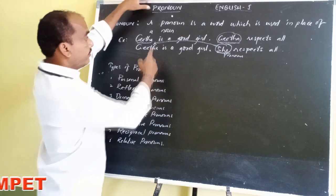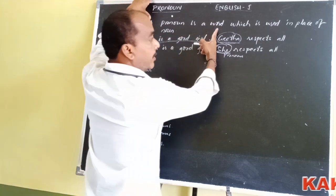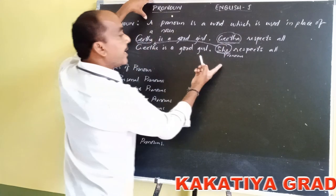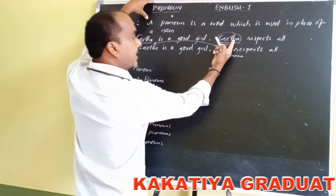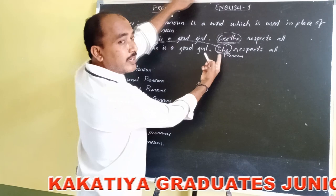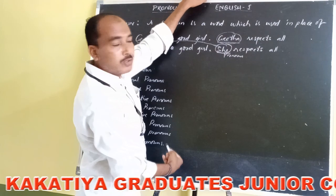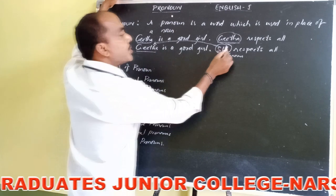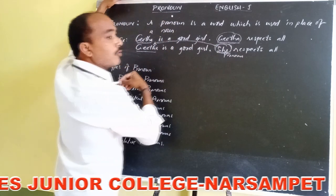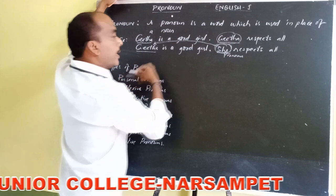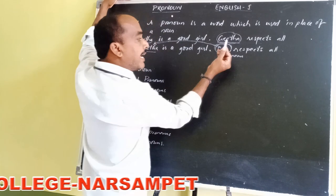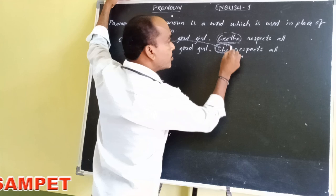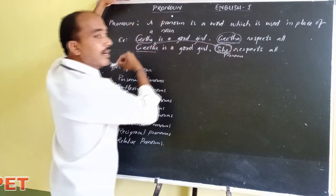The definition: a pronoun is a word which is used in place of a noun. Gita is a noun, but 'she' is not a noun — it is a pronoun. Why? Because in place of Gita, I replaced it with the word 'she'. So 'she' is called a pronoun.